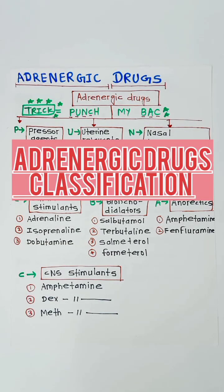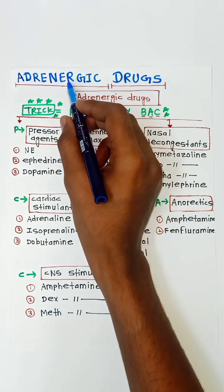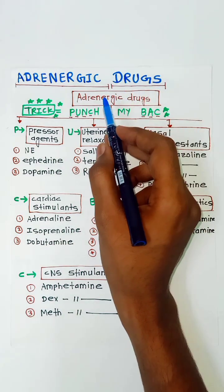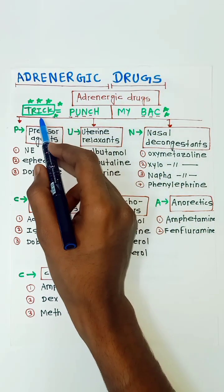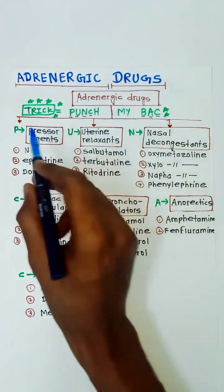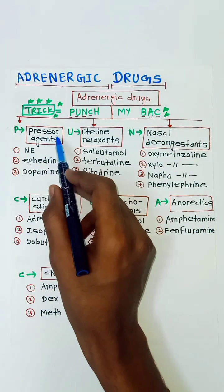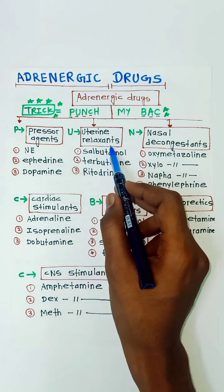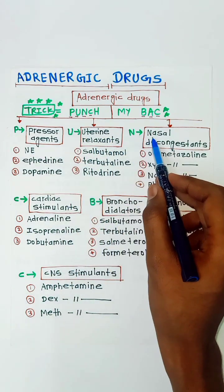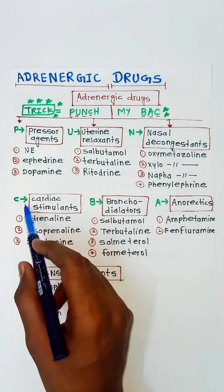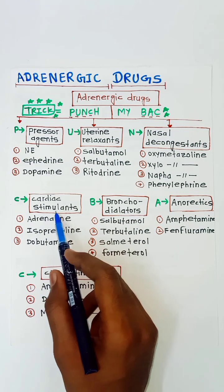Hello guys, welcome to my channel. I am Sudarshan. Today's topic is adrenergic drug classification. The trick to remember is 'PUNCH MY BACK': P for pressure agents, U for uterine relaxants, N for nasal decongestants, C for cardiac stimulants.